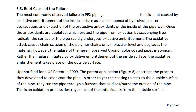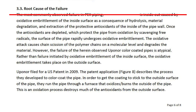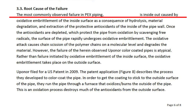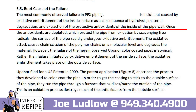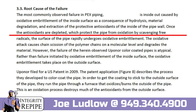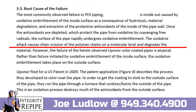The most commonly observed failure in PEX piping is inside-out, caused by oxidative embrittlement of the inside surface as a consequence of hydrolysis, material degradation, and extraction of the protective antioxidants from the inside of the pipe wall. Once the antioxidants are depleted, which normally protect the pipe from oxidation by scavenging free radicals, the surface of the pipe rapidly undergoes oxidative embrittlement.